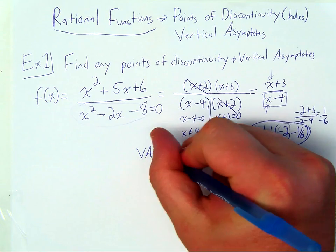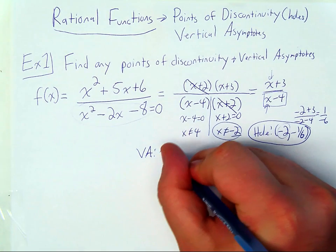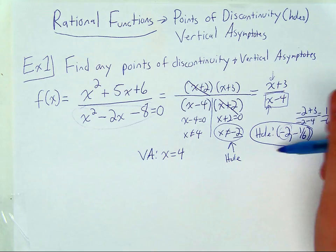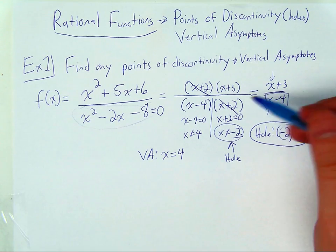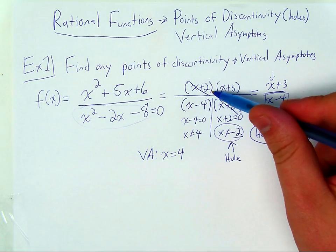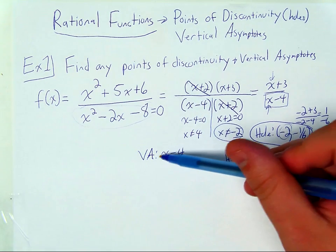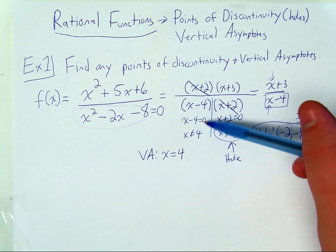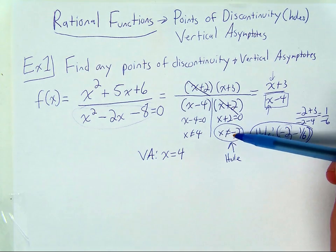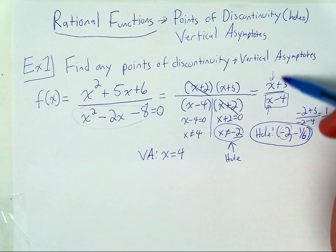So there's a vertical asymptote on this graph at x equals four. And remember, you could end up with more than one hole if more than one factor cancels, or you could end up with more than one vertical asymptote if more than one domain restriction exists after you simplify.